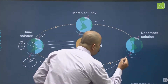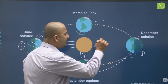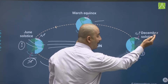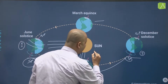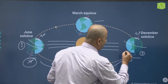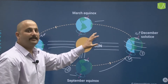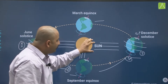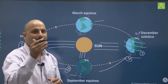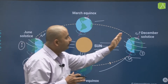Further, when we move towards our third position, which happens in the month of December, this is just the opposite situation. Here the north pole is facing away from the direct rays of the sun, whereas the south pole is facing the sun directly. You can see that the sun is directly overhead the Tropic of Capricorn, which means the southern hemisphere at this time is witnessing summer solstice.